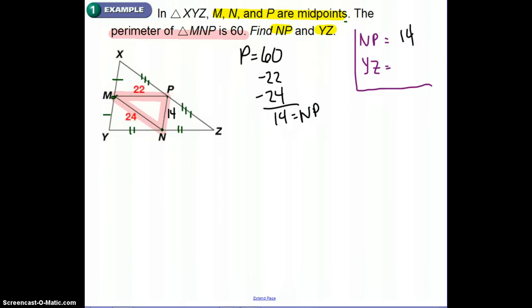Now, they want us to find YZ. So, YZ is this side right here, which, again, if I'm talking about midsegment, would have to pair up with this one. So, if I want to be able to find YZ, I could double what I get for NP, and that could give me that information. So, if I have YZ, NP is 22. So, if I were to double that, that would give me 24. Oh, excuse me.